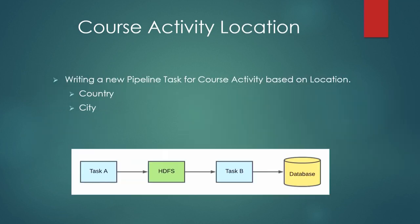The fourth task is location, giving the total number of learners based on their city. To achieve this, we first run a task that obtains the country, country code, and city using a Python module called pygeoIP. We provide the IP address of learners from the tracking log files, and it returns the corresponding country, country code, and location. This data is stored in HDFS and then used to run the course activity location task to get the final results.